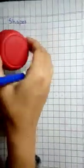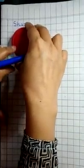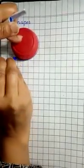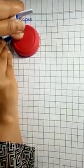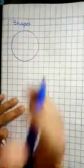First we have to take any lid of circle shape and then you have to put it here on your copy or on your rough register. So you can trace it like this. Now I get which shape? Circle.